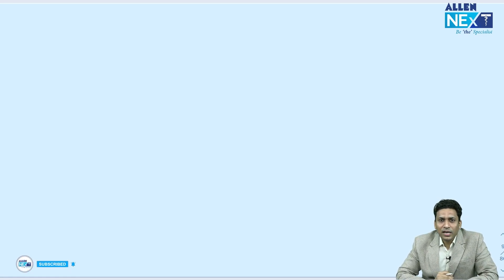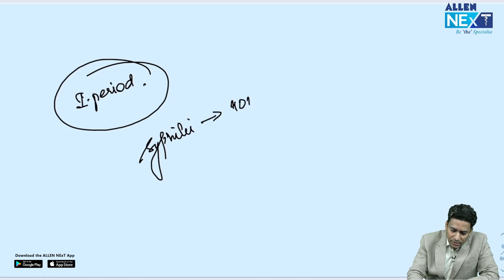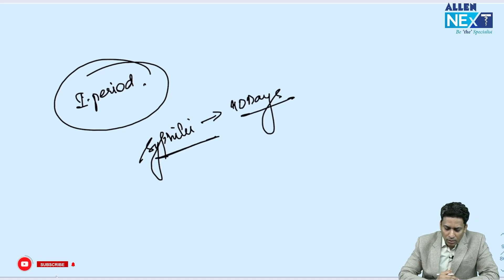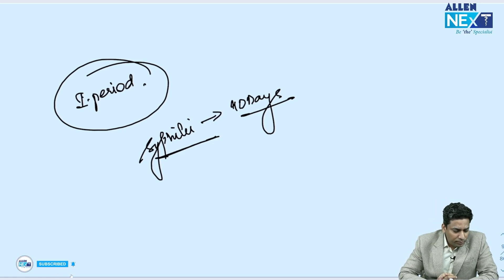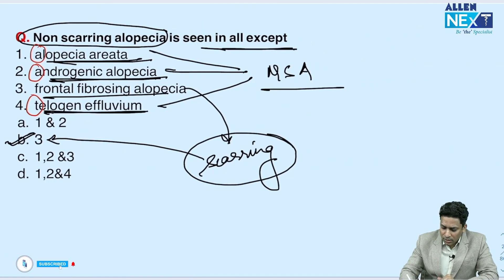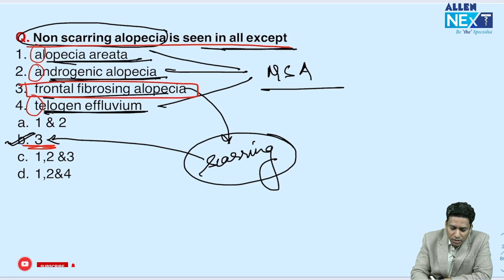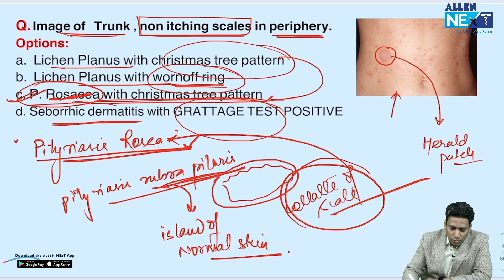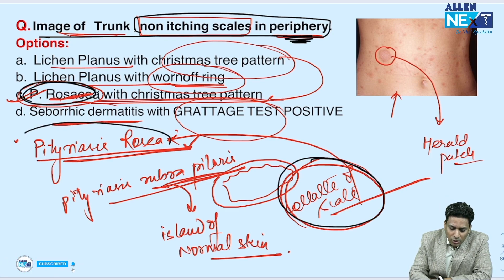Let me quickly recap all the answers. First: non-scarring alopecia is seen in all except frontal fibrosing alopecia — it causes scarring alopecia, the rest cause non-scarring. Second: image of the trunk showed non-itchy scaly rashes with collarette of scales at the periphery — answer is Pityriasis rosea. There was also a question on incubation period; for syphilis it is 90 days.